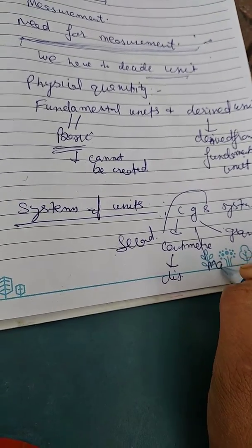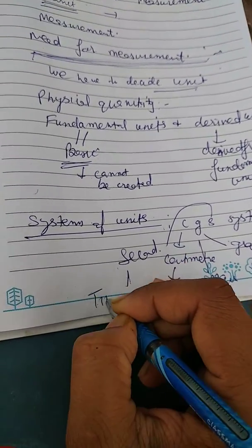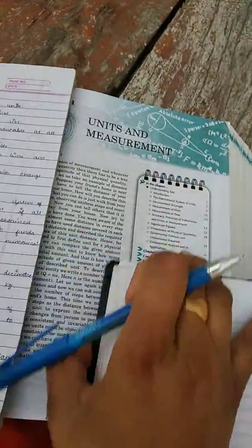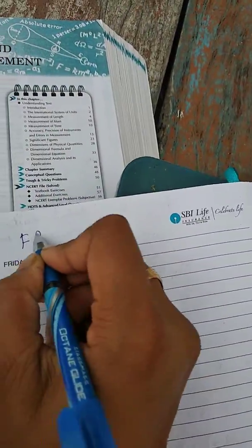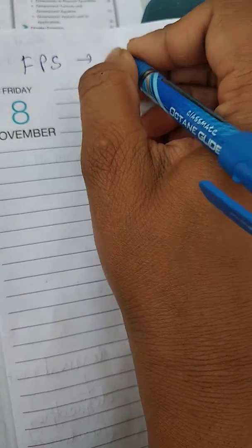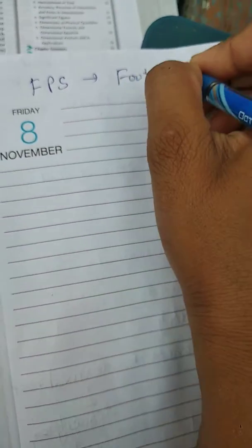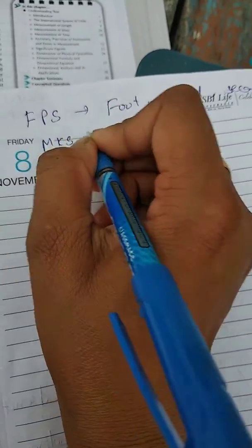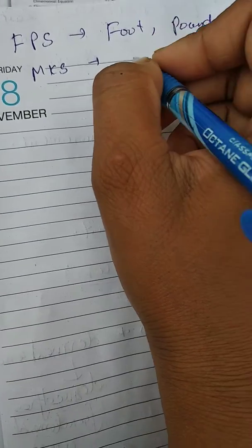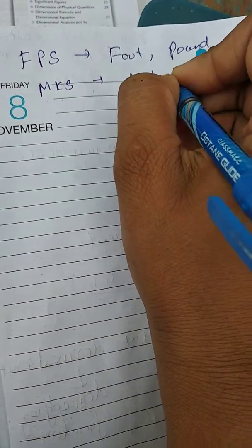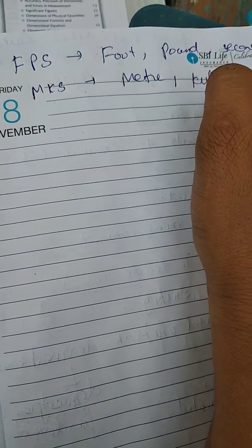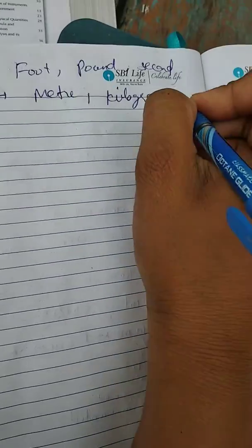The second system is FPS - FPS means foot, pound, and second. Third is MKS - M is meter, then kilogram, then second. Clear.